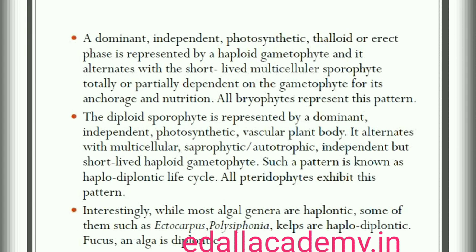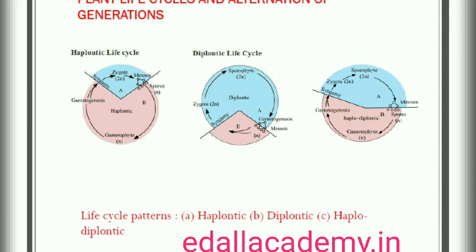On the other extreme is the type wherein the diploid sporophyte is the dominant, photosynthetic, independent phase of the plant. The gametophyte phase is represented by the single to few-celled haploid gametophyte. This kind of life cycle is termed diplontic. An alga, Fucus sp., represents this pattern. In addition, all seed-bearing plants (gymnosperms and angiosperms) follow this pattern with some variations, wherein the gametophyte phase is few to multi-celled.